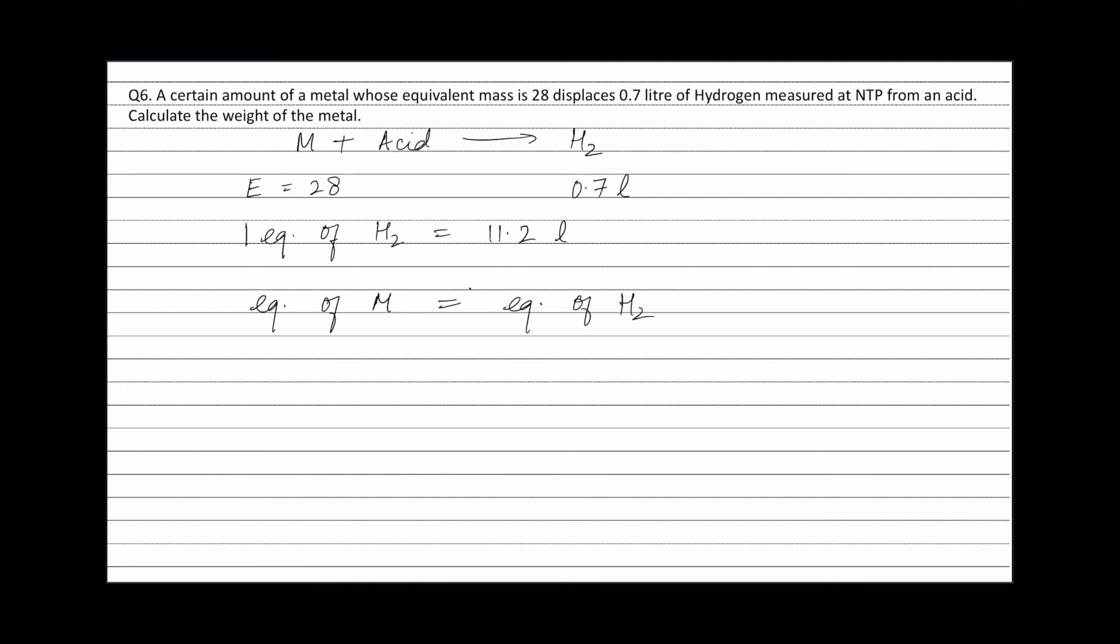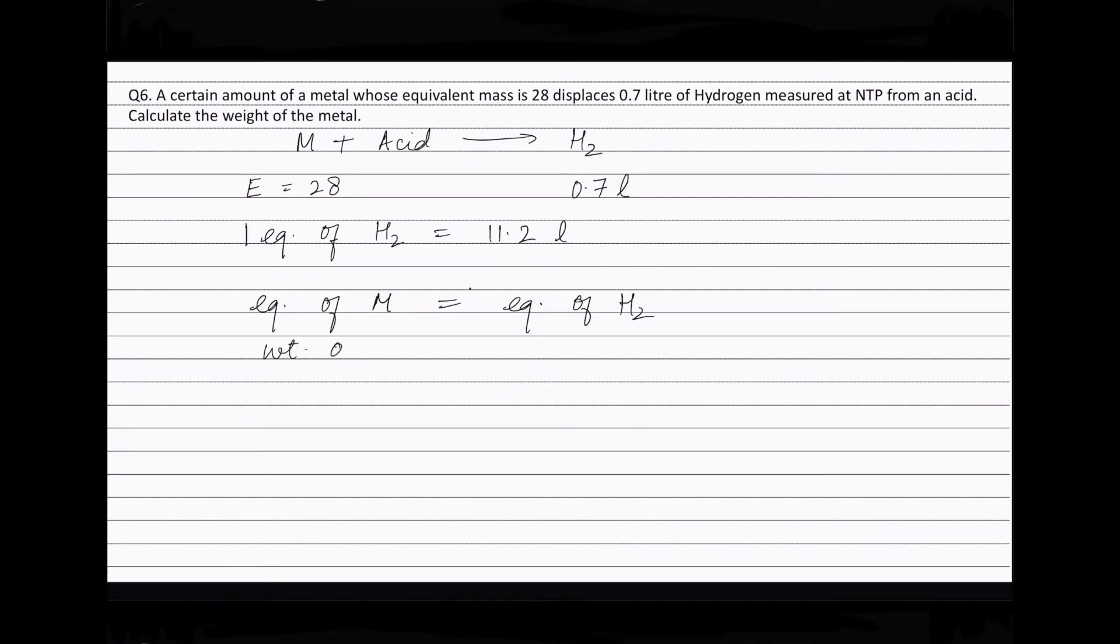Equivalent of metal will be weight of metal divided by equivalent weight of metal that is 28. And this is equal to equivalent of hydrogen which is equal to 0.7 divided by 11.2. Solving this equation we get